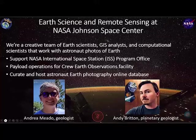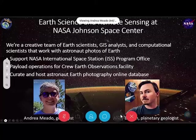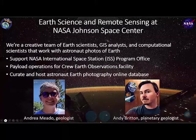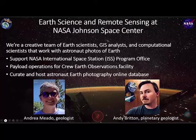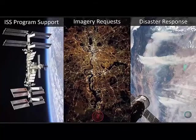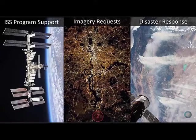Part of what we do with our astronaut photography of Earth is we support the ISS program. This picture on the left is a photograph taken of the International Space Station with Earth below it. We also facilitate imagery requests — these could be researchers from around the world that need new or recent imagery of certain places for various reasons, and part of our job is to acquire new imagery for them.